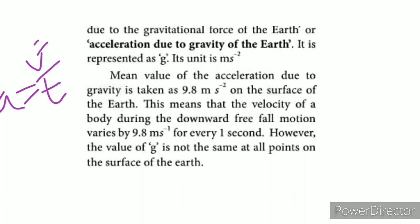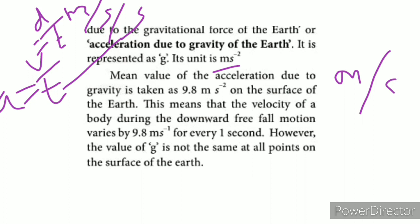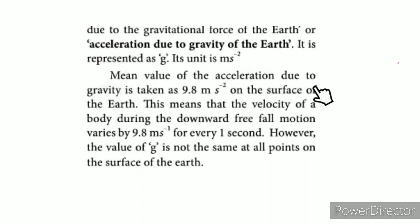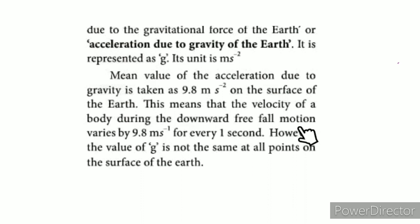The velocity is displacement divided by time. The displacement unit is meter per second per second. The unit of acceleration is meter per second squared, which is meter second power minus 2. The mean value of acceleration due to gravity is taken as 9.8 meter per second squared on the surface of the Earth. This means the velocity of a body during downward free fall increases by 9.8 meter per second for every one second.